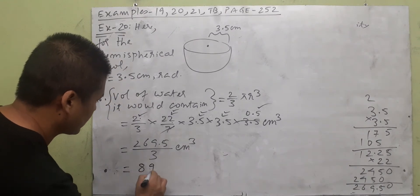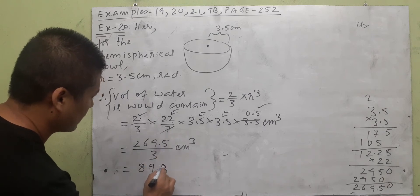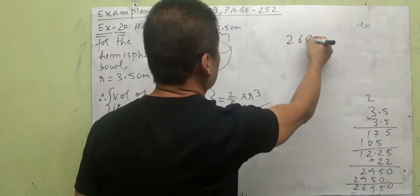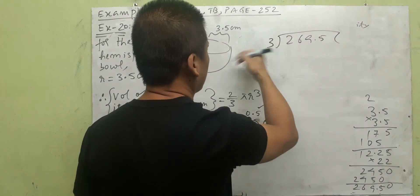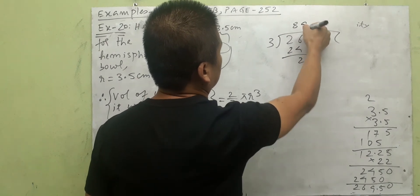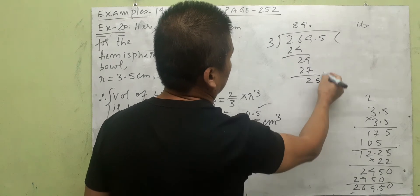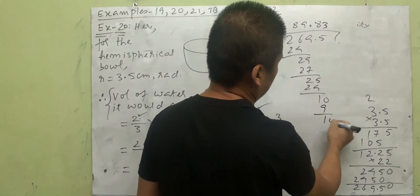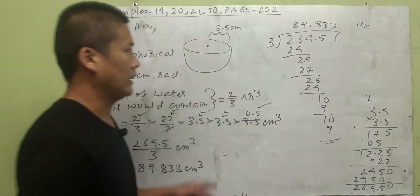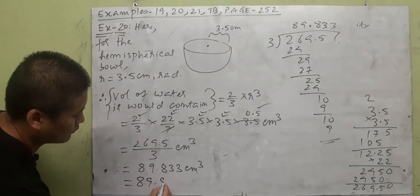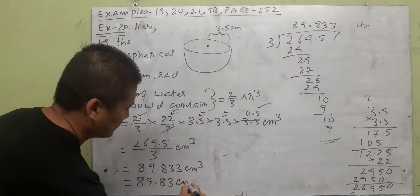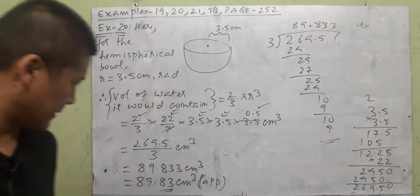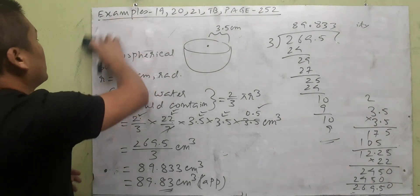Dividing 269.5 by 3: 3 × 8 = 24, remainder 2; bring down 9 → 29, 3 × 9 = 27, remainder 2; and continuing, we get 89.833... cm³. Since the third decimal place is less than 5, we round to 89.83 cm³. So the volume of water the hemispherical bowl can contain is approximately 89.83 centimeter cube.